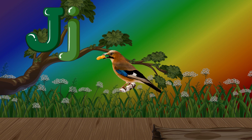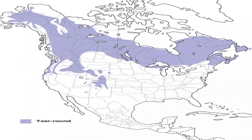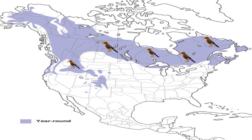J for jay. Where is the jay found? They favour broadleaf woodland but are also found in conifer woodland, scrub and urban areas. The jay's signature screeching call is a sure sign this bird is nearby.